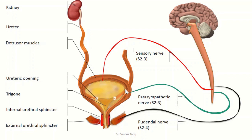The urinary bladder has two sphincters. One is the internal urethral sphincter, which is under involuntary control, and the other is the external urethral sphincter, which is under voluntary control.